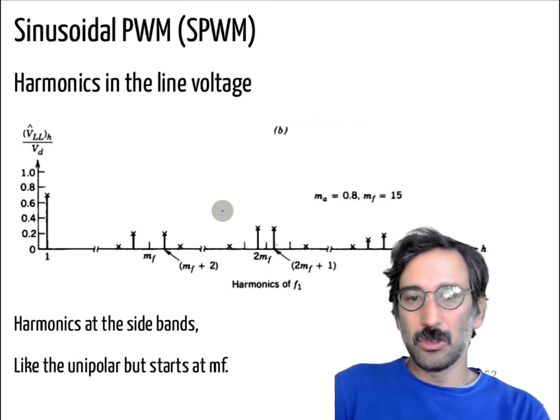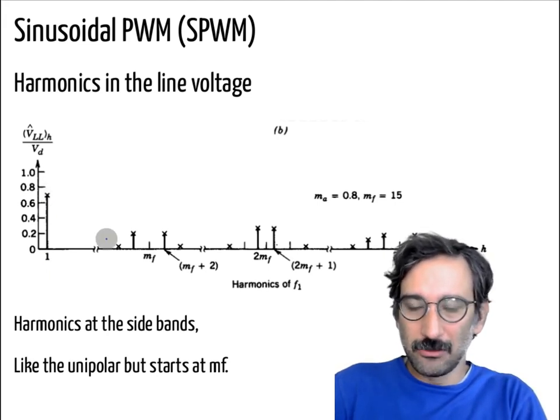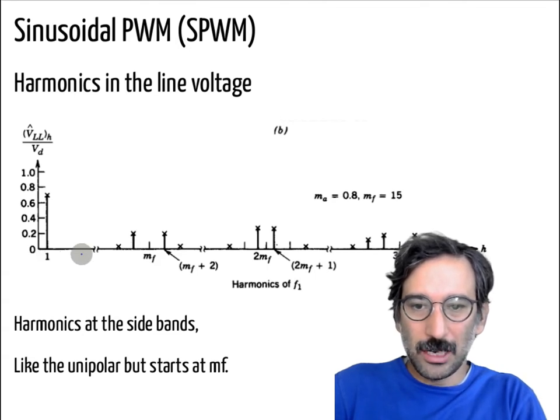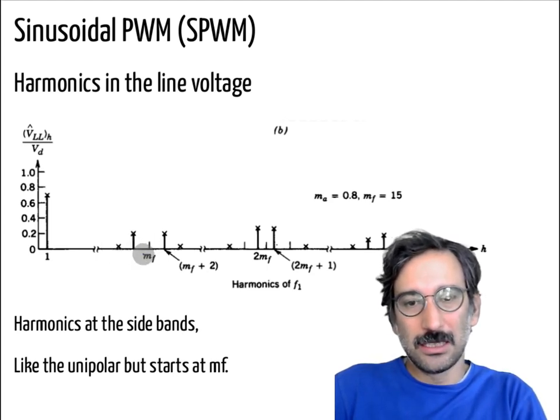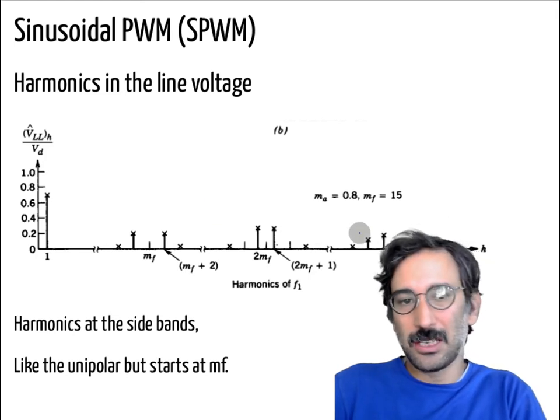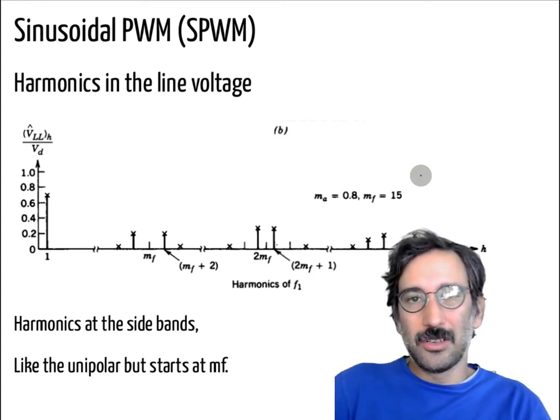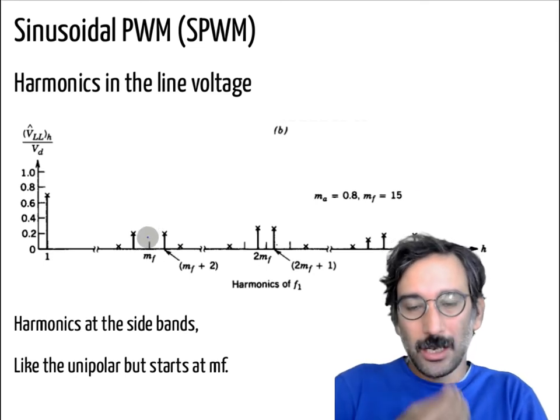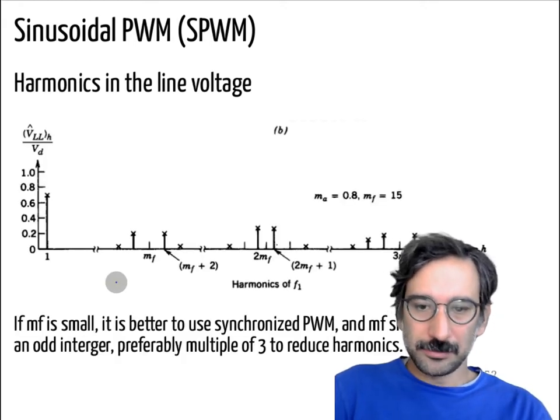So if you look at the harmonics in the line voltage, again it is similar to what we have seen so far. So if you are working in the linear range, this is I think for the bipolar case, you don't have any harmonics in between if you are working in the linear range. And your harmonics starts at your mf. mf is again the frequency modulation ratio. You have the sidebands, then 2mf, then 3mf. So for example for this case, let's say mf is 15 and if your fundamental frequency is 50, then your harmonics will be 750, 700 and 800 Hertz harmonics.